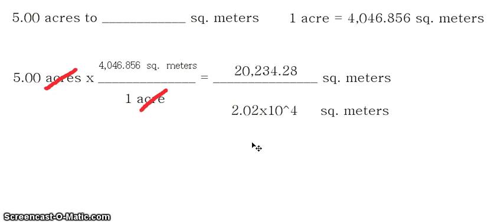So remember, the three key tasks that we need to have in doing dimensional analysis is to have our equivalent statement, then we start with what is given, the correct format of your conversion factor, and of course, before you report the final answer, you have to always check the correct number of significant figures.